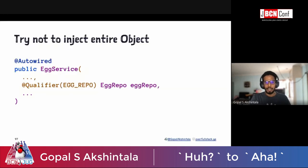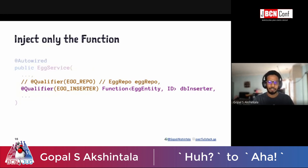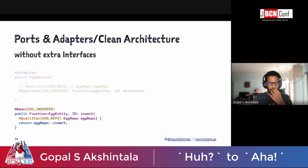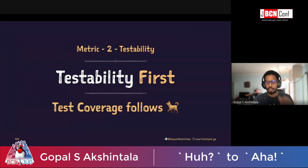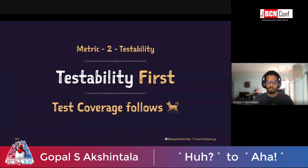Another tip: dependency injection. We can use Spring marking code, but better: don't inject your entire object if you're only dependent on one function. Inject a function instead — if you're only dependent on an insert function, inject it as a function. This is ports-and-adapters architecture without extra interfaces. You can happily stub it in your tests without mocking the entire repository. My point is testability should come first; test coverage is just a metric that indicates it. You can have 100% test coverage without your code actually being testable, so never let that happen — always focus on testability.